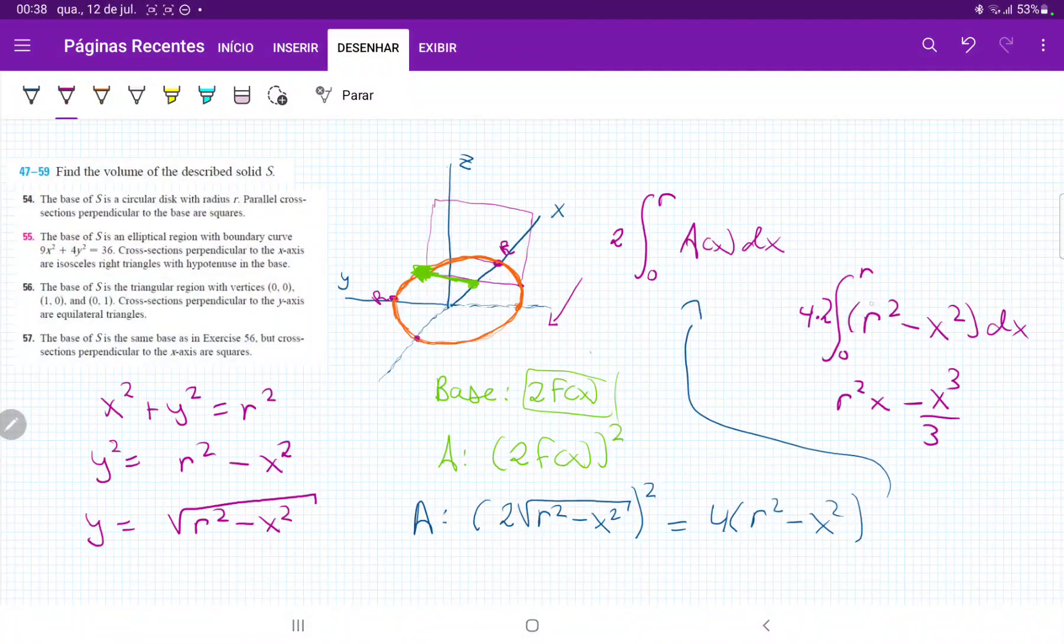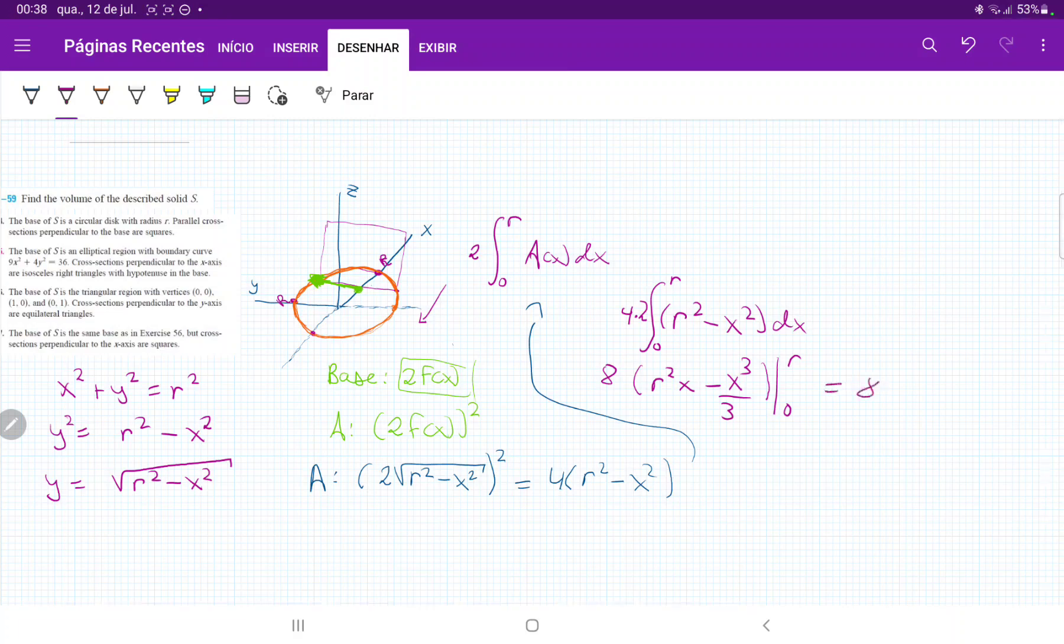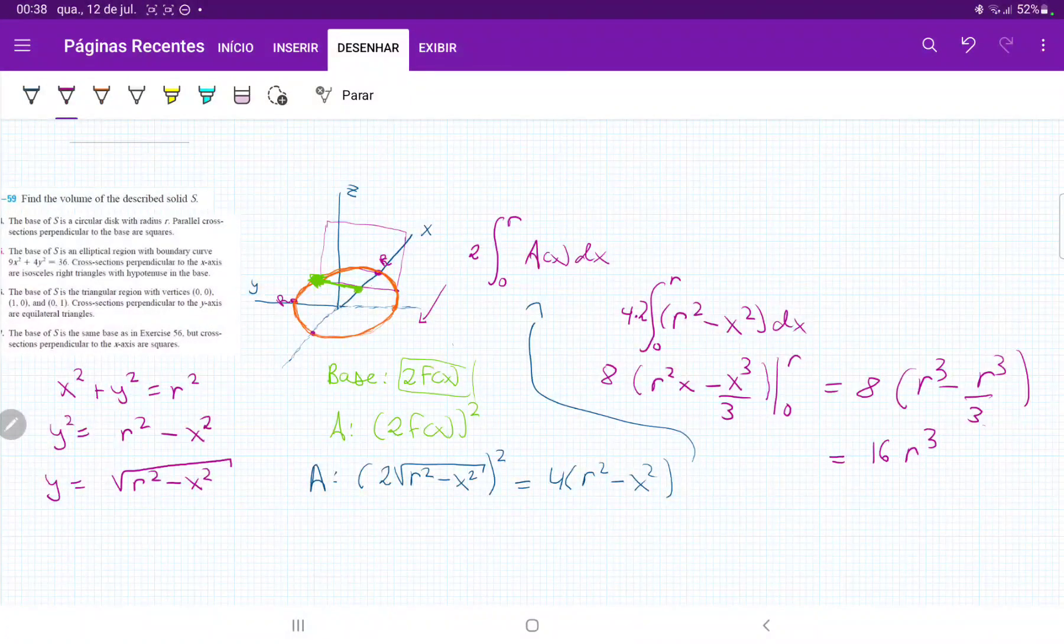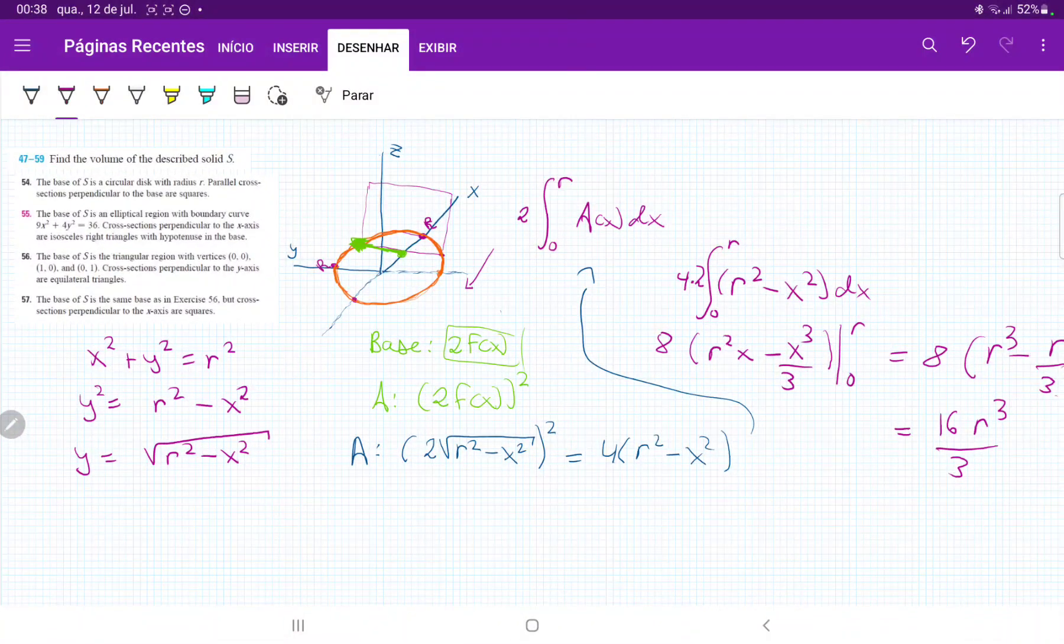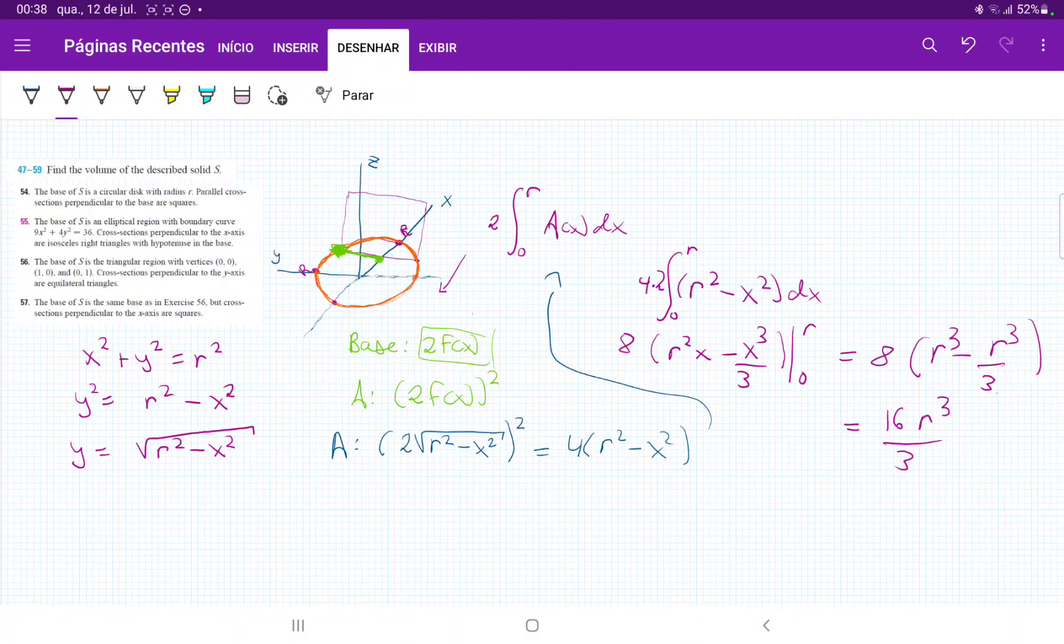So all of this times 8, evaluated from 0 to r. When I evaluate it, it's going to give me 8 times (r³ - r³/3), which gives me 8 times (2r³/3), that's 16r³/3. And that is the volume of my circular disk with radius r, whose cross-sections perpendicular to the base are squares. Thank you.